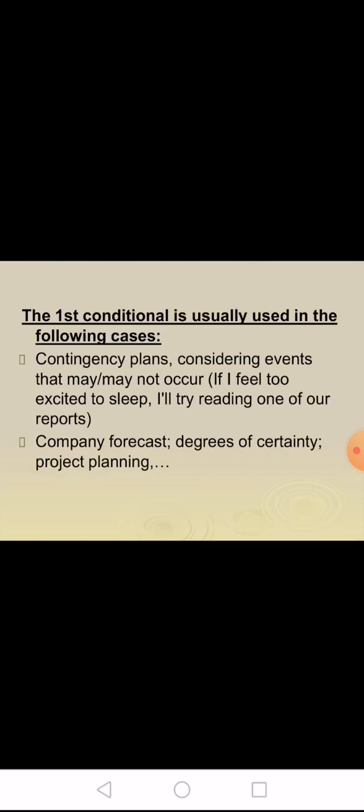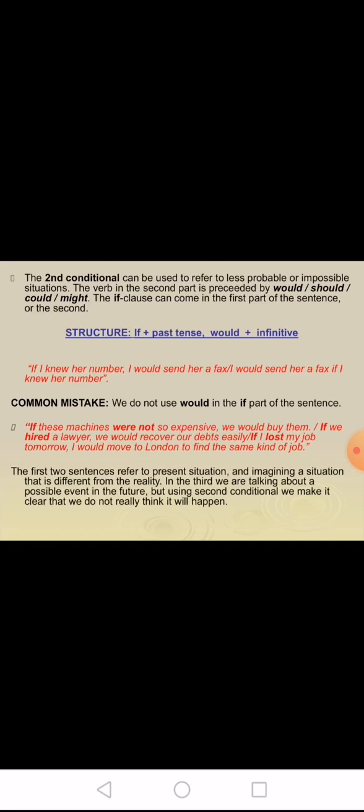In a sentence with an if clause, we can use the imperative or other modal verbs instead of will plus infinitive. For example: if you hear from Susan today, tell her to ring me. If the traffic is bad, I may get home late. The first conditional is usually used for contingency plans and considering events that may or may not occur. For example: if I feel too excited to sleep, I will try reading one of our reports.